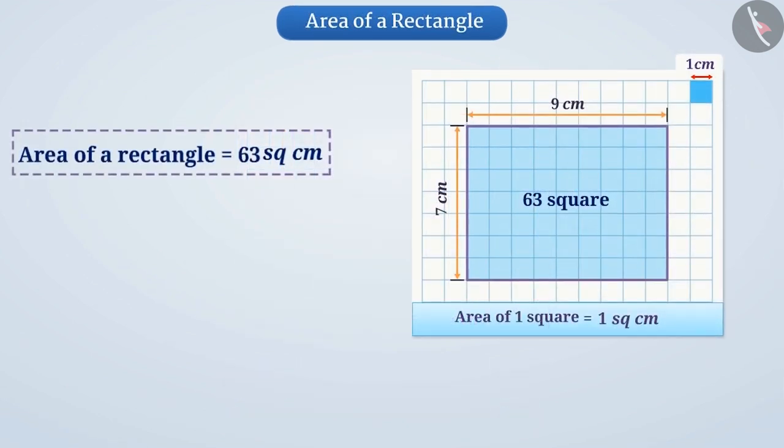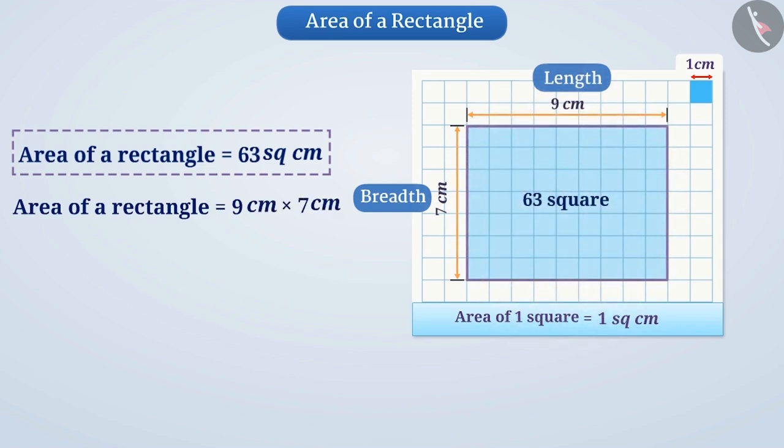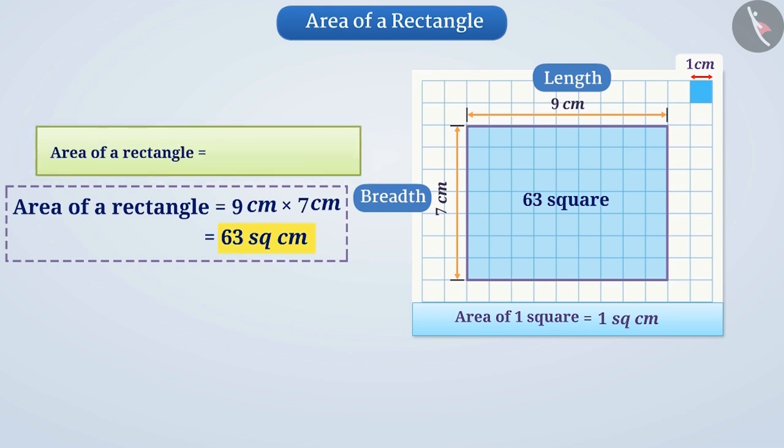Again, if we multiply the length and breadth, we get the area of rectangle: 9 cm multiplied by 7 cm equals 63 cm². Thus, we can say that the area of a rectangle is length multiplied by breadth.